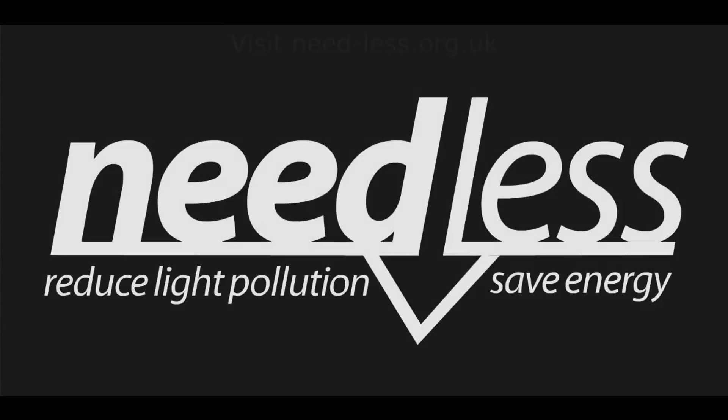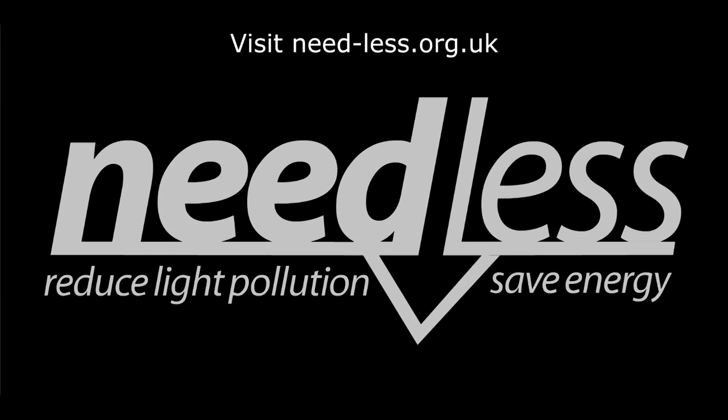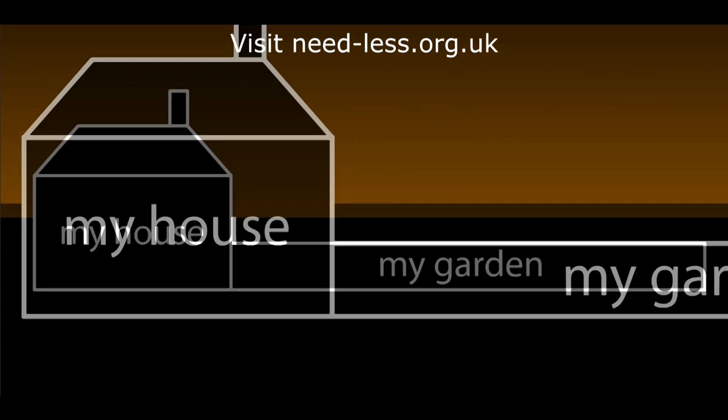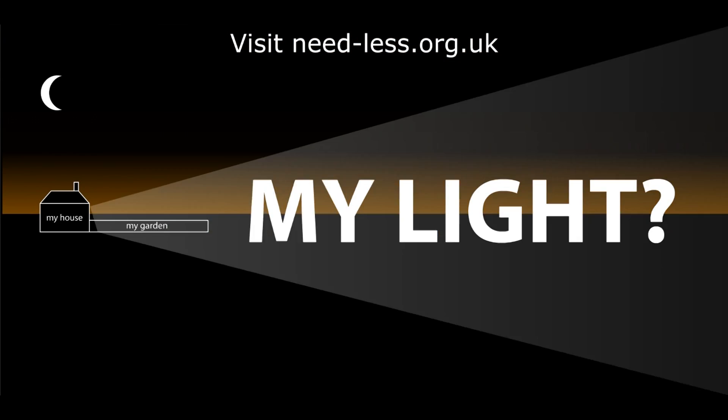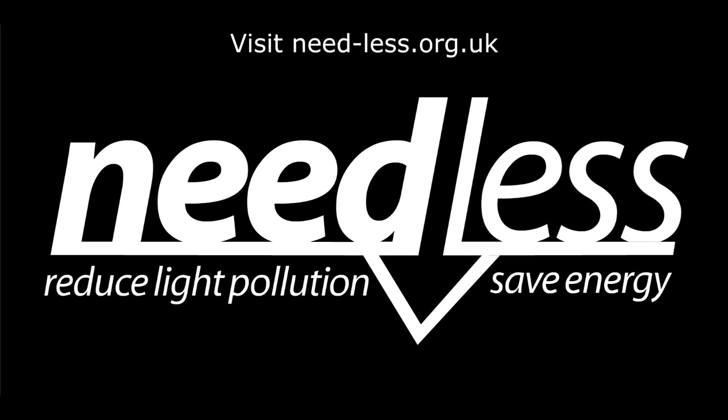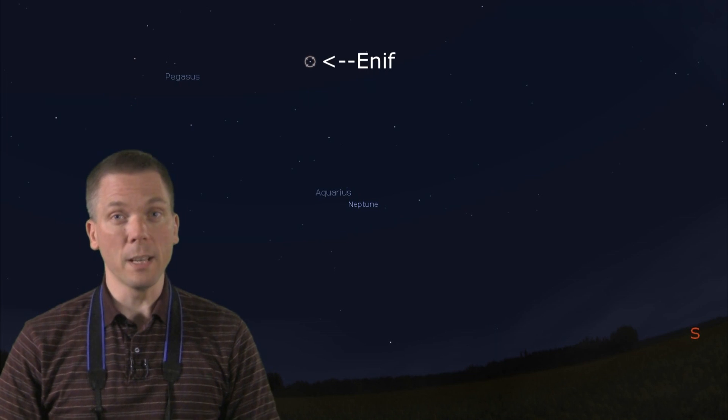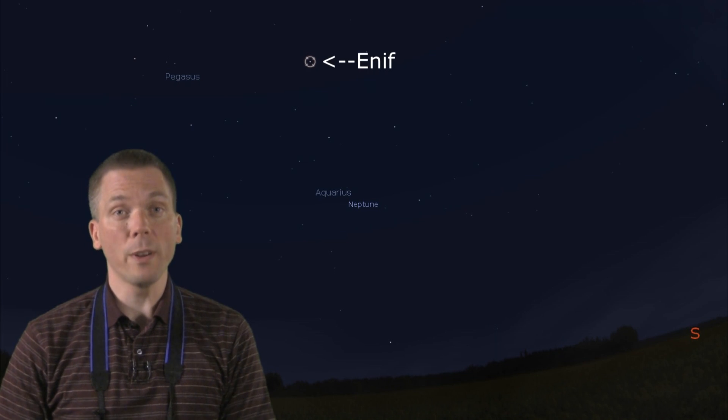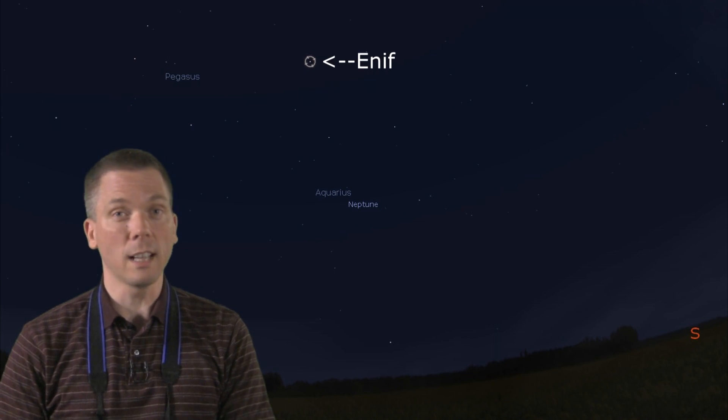Next we'll find Neptune from the north. This time start at the brighter star Enif in Pegasus. This is a 2.4 magnitude star that looks slightly orange.